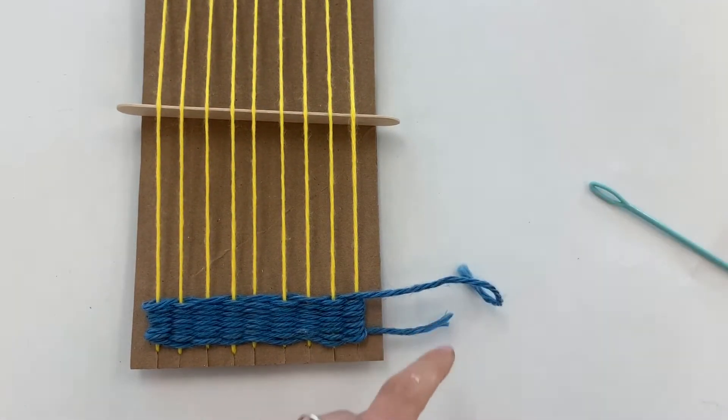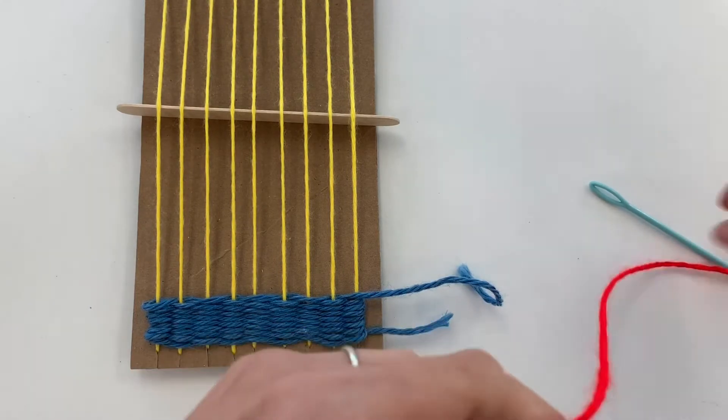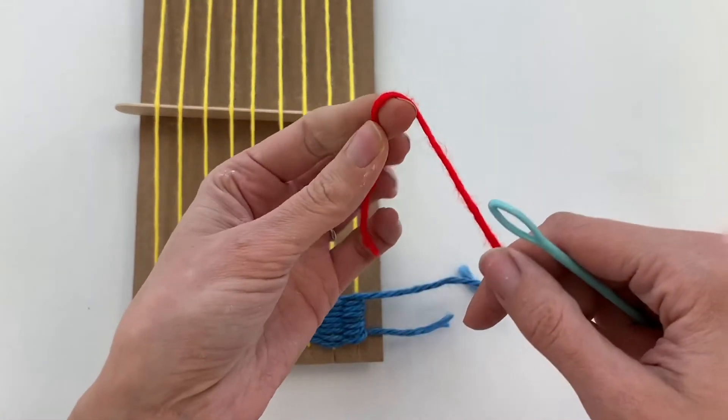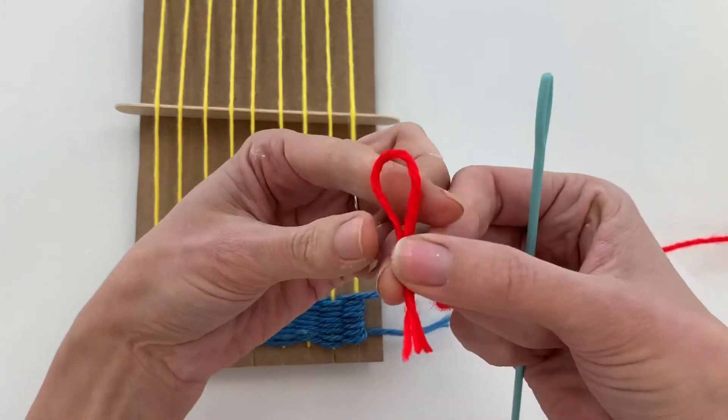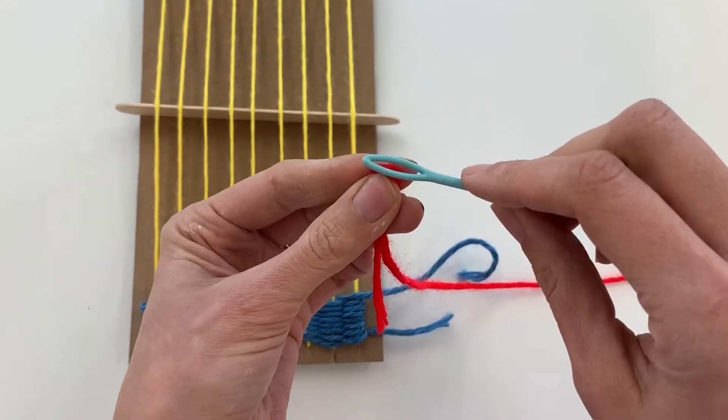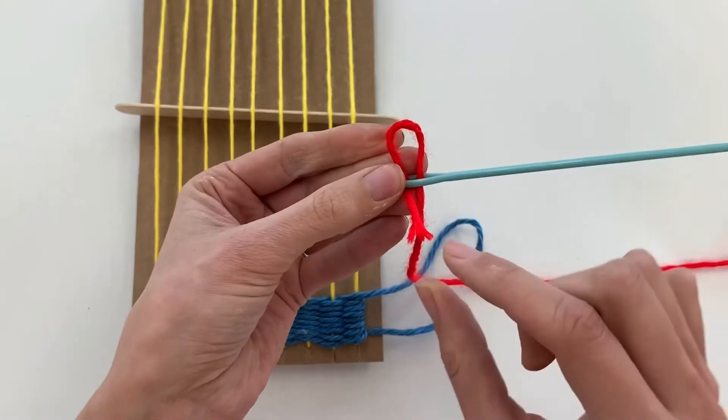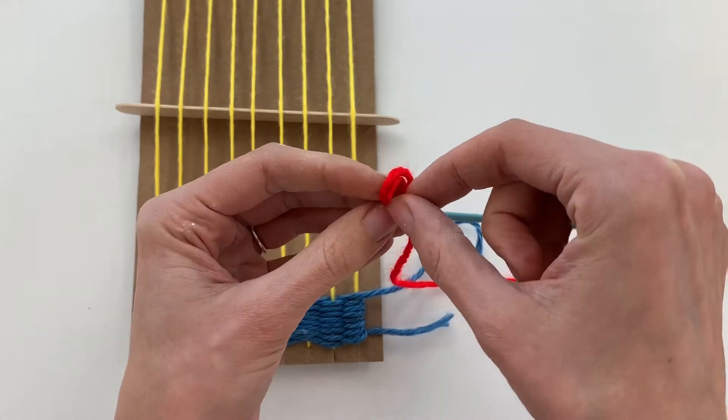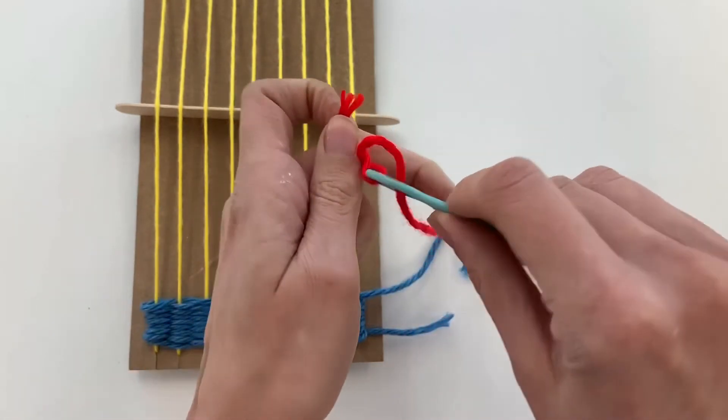Now when you're ready for your next color string, then you're just going to thread your needle just like the last time. You're going to fold this into a small loop, put that through the eye of the needle, and take this little tail and place it through that loop. And then pull it tight.